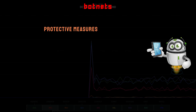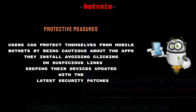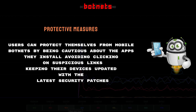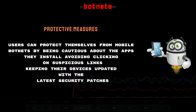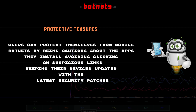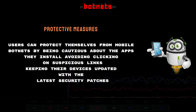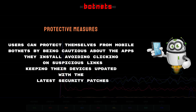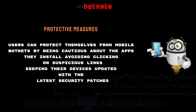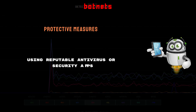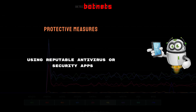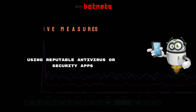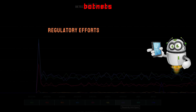Users can protect themselves from mobile botnets by being cautious about the apps they install, avoiding clicking on suspicious links, keeping their devices updated with the latest security patches, and using reputable antivirus or security apps.